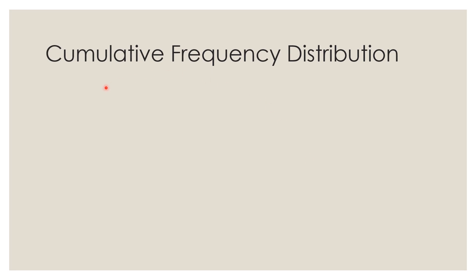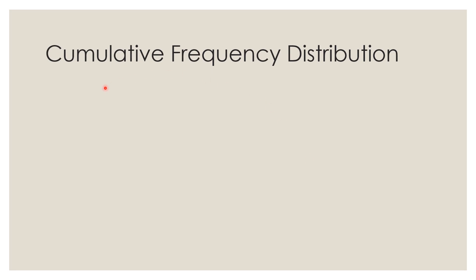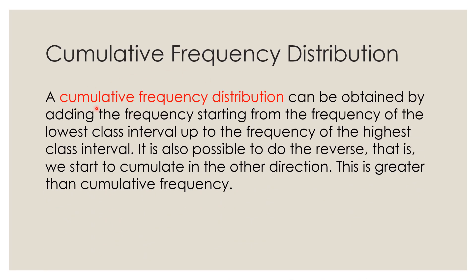So what is a cumulative frequency distribution? A cumulative frequency distribution can be obtained by adding the frequency starting from the frequency of the lowest class interval up to the frequency of the highest class interval. It is also possible to do the reverse — that is, we start to accumulate in the other direction. This is called the greater than cumulative frequency.